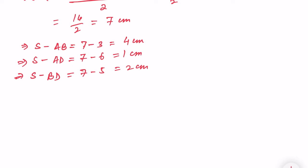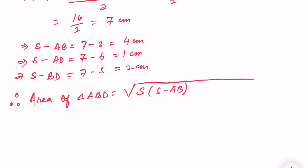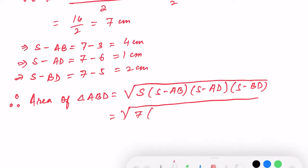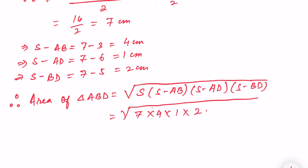Now let us find the area of triangle ABD. Area of triangle ABD equals root over S into S minus AB into S minus AD into S minus BD. So that is root over 7 into 4 into 1 into 2, which is root over 56 centimeter square.